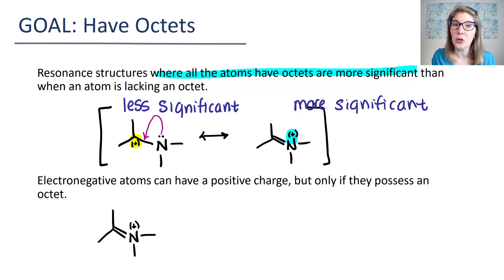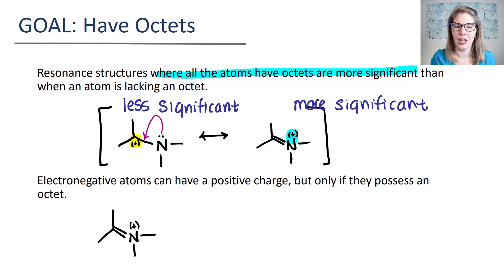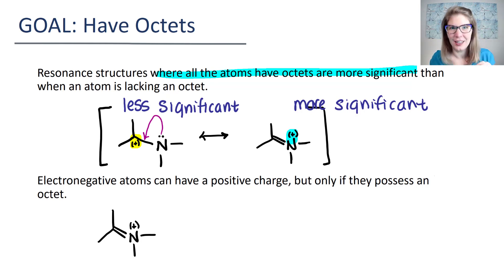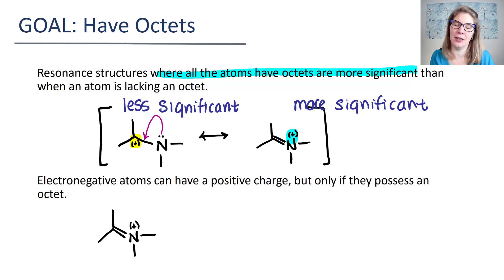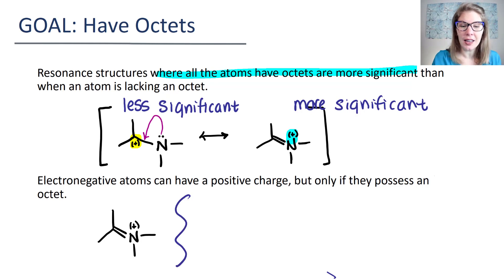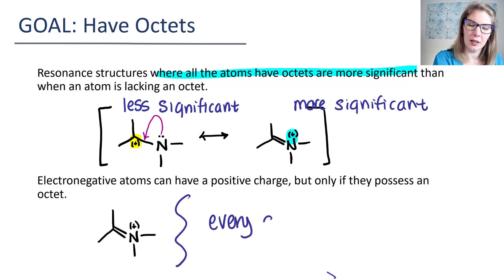The second structure is more significant because all of the atoms have an octet. At this point, students will usually look at this and say, but the nitrogen is positive — nitrogens don't want to be positive, nitrogens are electronegative. You have a positive charge on an electronegative atom. And yes, it's okay because there's a priority here: the priority is accomplish octets. Having an octet is more important than having a positive charge on an electronegative atom. So this one is more significant because every atom has an octet.